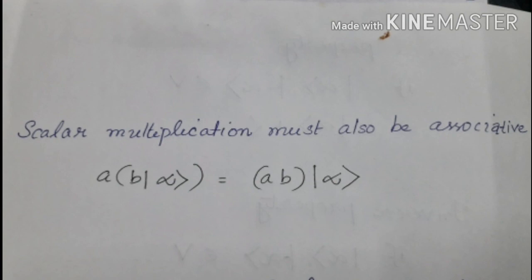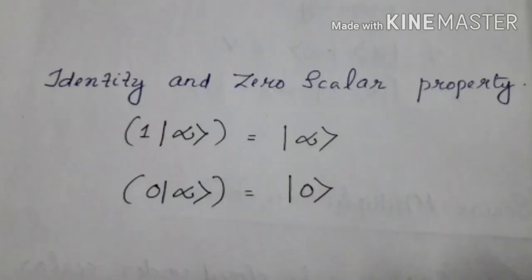Scalar multiplication must also be associative — that is, when multiplying two or more scalars by a vector, we can multiply all the scalars together and then multiply the vector, or we can multiply the scalars separately. Scalar multiplication also obeys the identity and zero scalar property.